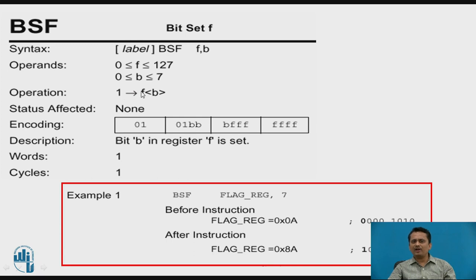The operation carried out by BSF is: bit b of file register f is set. This is how the opcode is encoded — changing the file register or bit location changes the opcode accordingly. BSF is a single-word, single-cycle instruction.